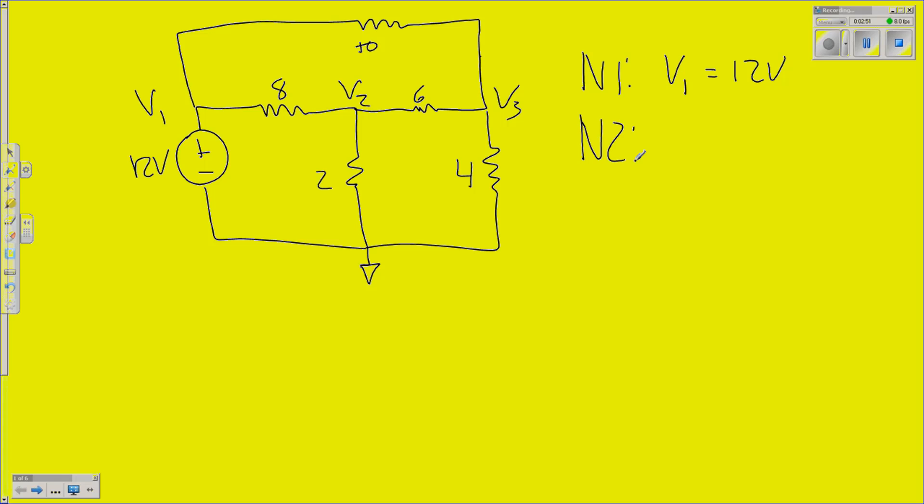N2. This is where we start using Kirchhoff's current law. I'm going to sum all the currents as if they were flowing away from that point. Obviously, I'm going to be wrong on one of these, but the math is going to hold up as long as I'm consistent. So, in this case, I'll have V2 minus V1 over 8. Now, here I was talking about currents, yet I put it in terms of voltage and resistance. If you remember Ohm's law, V over R equals I. That's all I've done. I've just replaced that current for each of these branches with this equation. And, we can go through the other two: V2 minus V3 over 6, and lastly, V2 over 2.